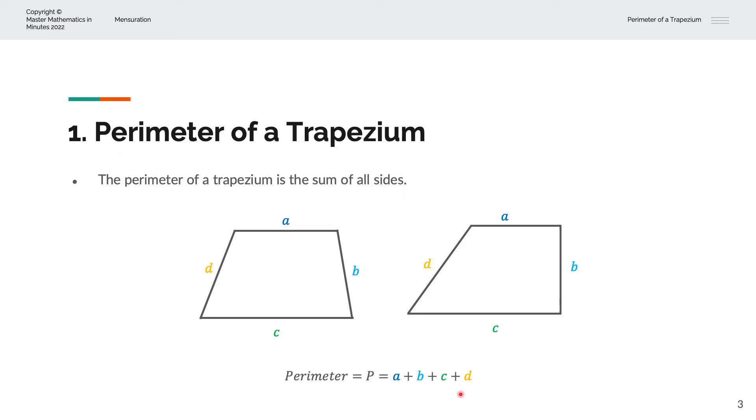So a trapezium is where we have one pair of parallel sides, A and C. These two lines are parallel.